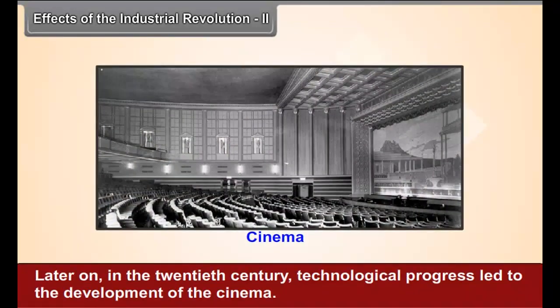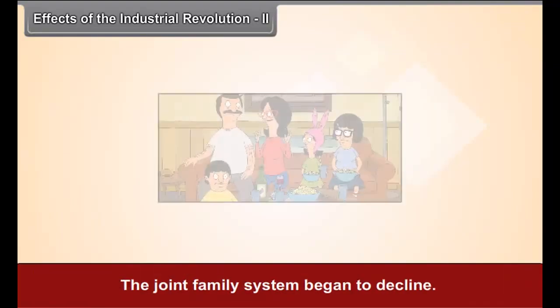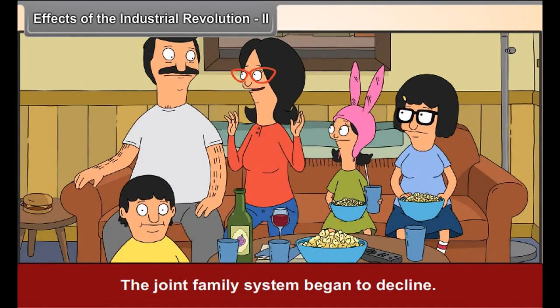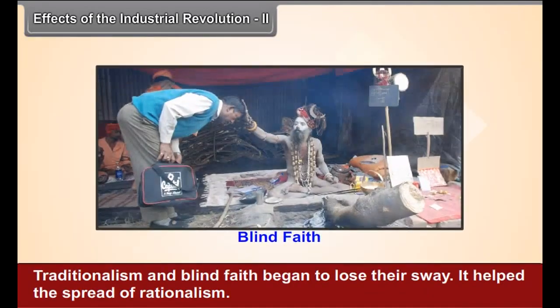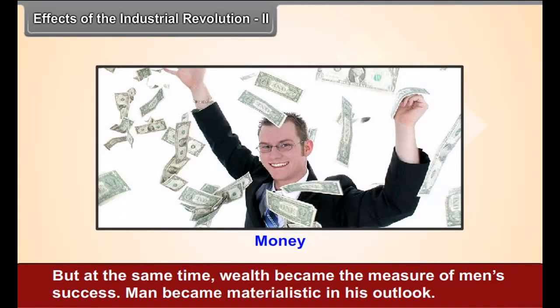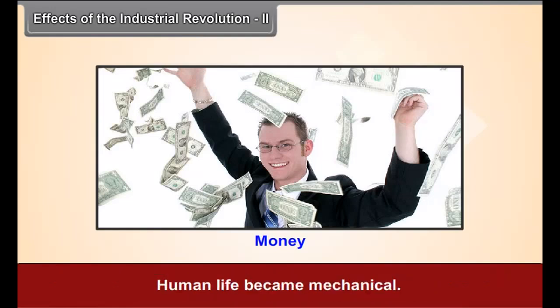Later on in the 20th century, technological progress led to the development of the cinema. The joint family system began to decline. Traditionalism and blind faith began to lose their sway, and this helped the spread of rationalism. But at the same time, wealth became the measure of man's success, man became materialistic in his outlook, and human life became mechanical.